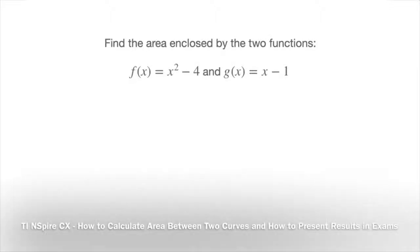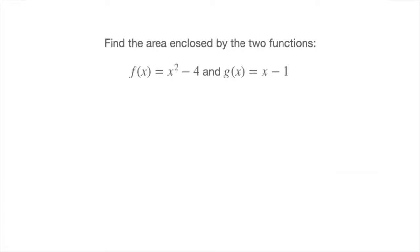We will now learn how to use our TI-Nspire to calculate the area enclosed between two curves. We're going to do so with the example shown here: find the area enclosed by the two functions f(x) = x² - 4 and g(x) = x - 1. Let's go straight to our TI-Nspire.